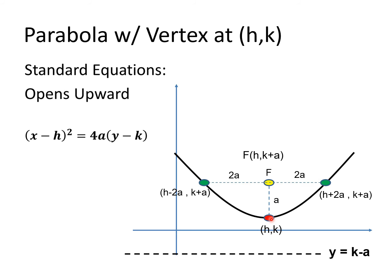Since the distance between the vertex and focus is a, that is also the distance between the vertex and the directrix. Moving downward from the vertex by a gives k − a. The directrix is a horizontal line at that value, so the equation of the directrix is y = k − a.